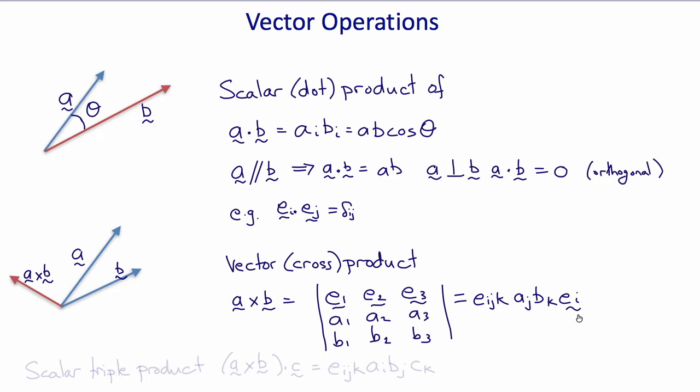The dot product of a cross product and a vector is called the scalar triple product, a cross b dot c, and is therefore a scalar. It equals eijk ai bj ck.